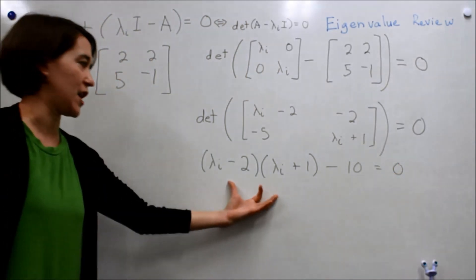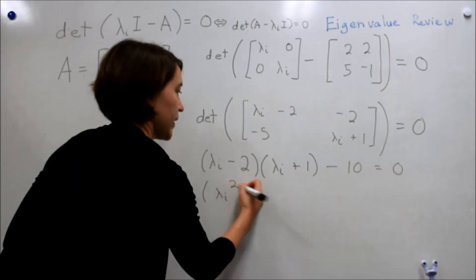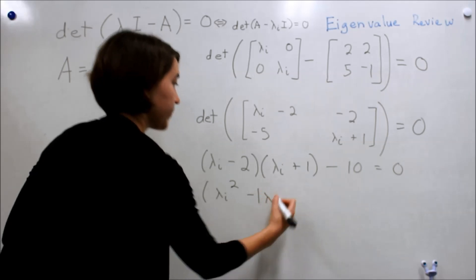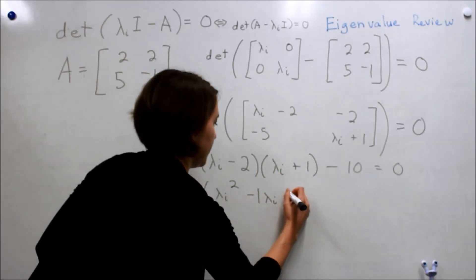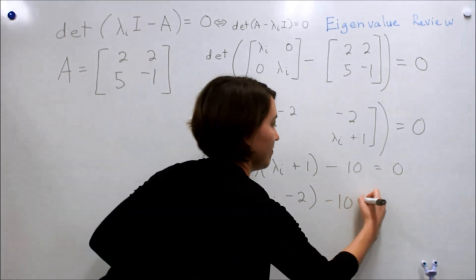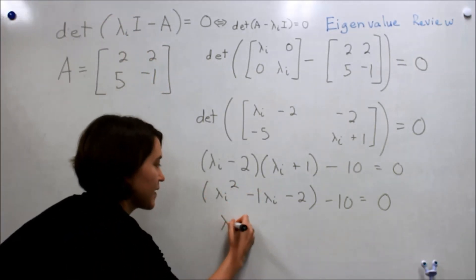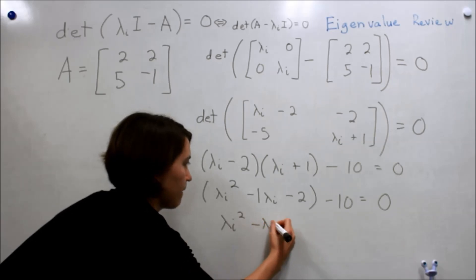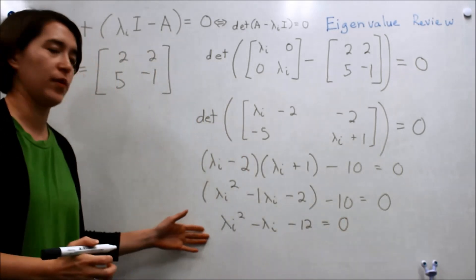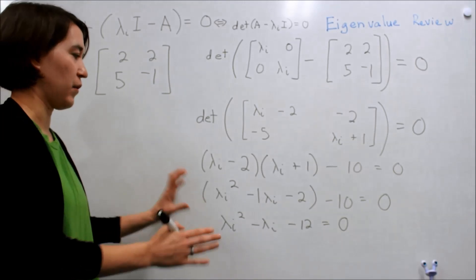We'll need to expand this expression out. So we'll do that, lambda squared, so minus lambda, and then multiply these two together, we get minus 2, and then add on this quantity. Simplify all this. So now we end up with this expression down here. And what we want to do is figure out where we can go from here.